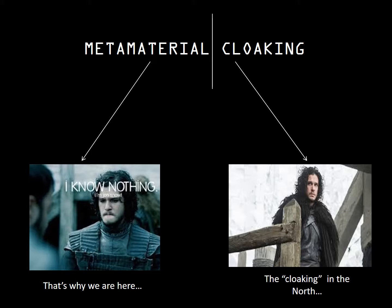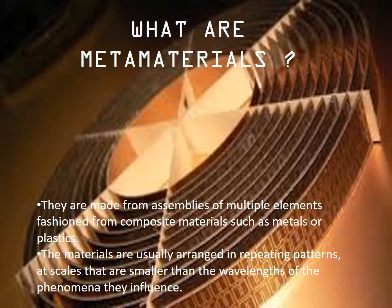Metamaterial cloaking is basically made of two words: metamaterial and cloaking. Now we all know what cloaking is but we don't have an idea what metamaterial is. Metamaterials are made from assemblies of multiple elements fashioned from composite materials such as metals or plastics. The materials are usually arranged in repeating patterns at scales that are smaller than the wavelengths of the phenomena they influence.